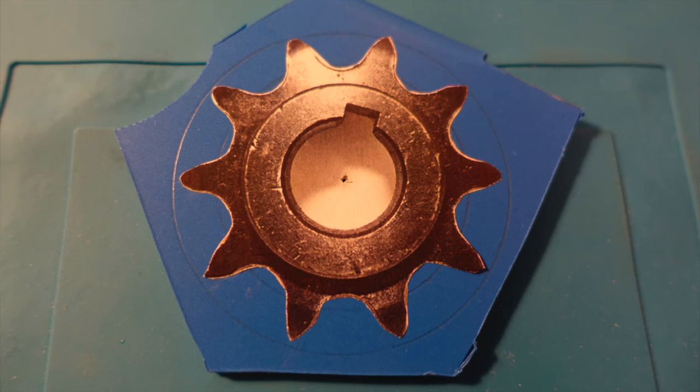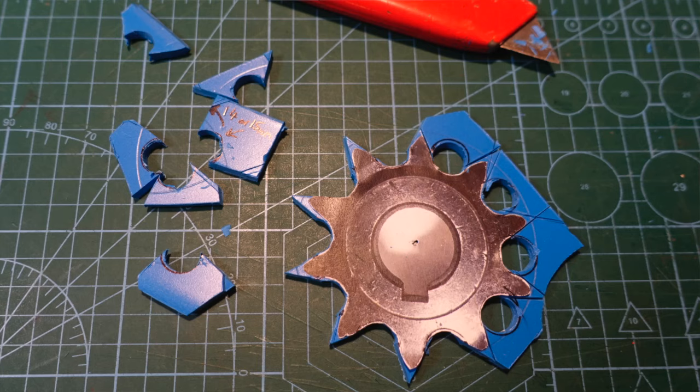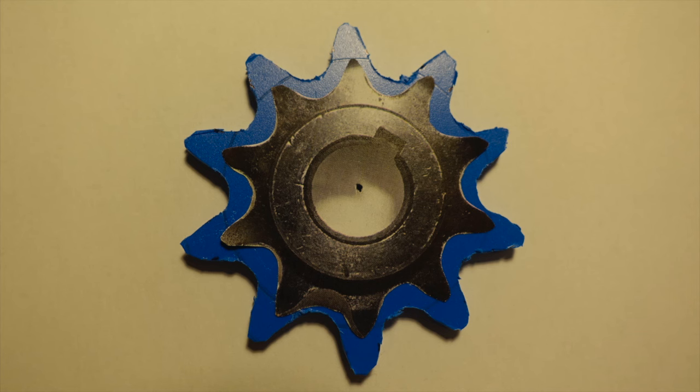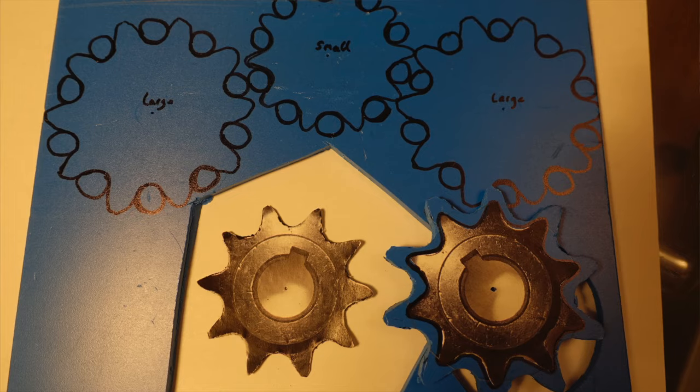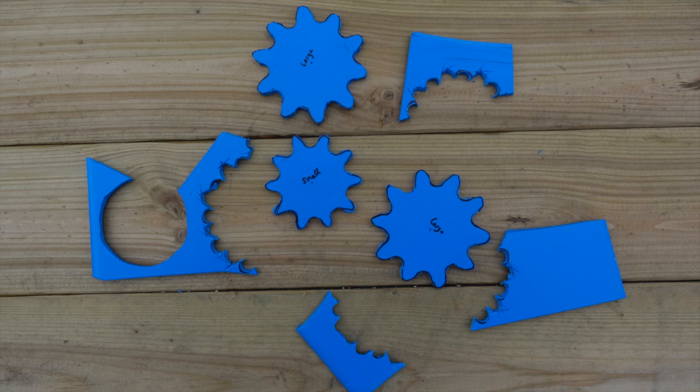It was then time to cut out the gears from the PVC foam board again by hand with a Stanley knife. This proved to be quite a complex and lengthy process but I got there in the end trying a range of tooth profiles.